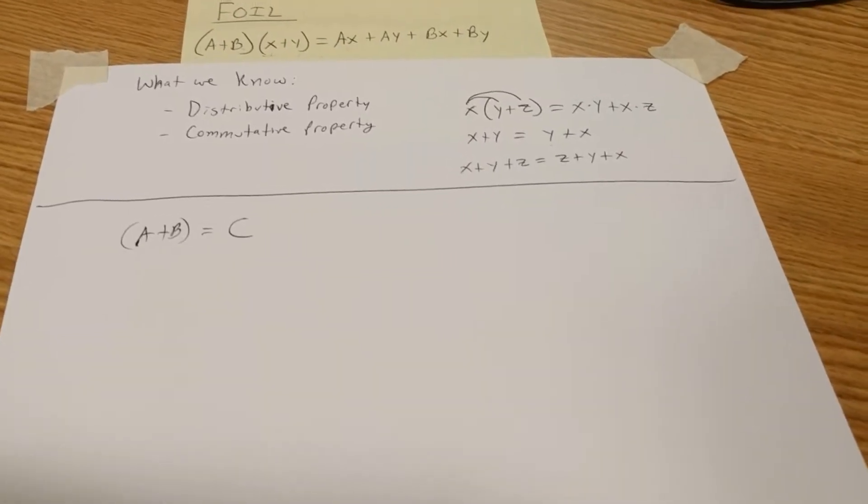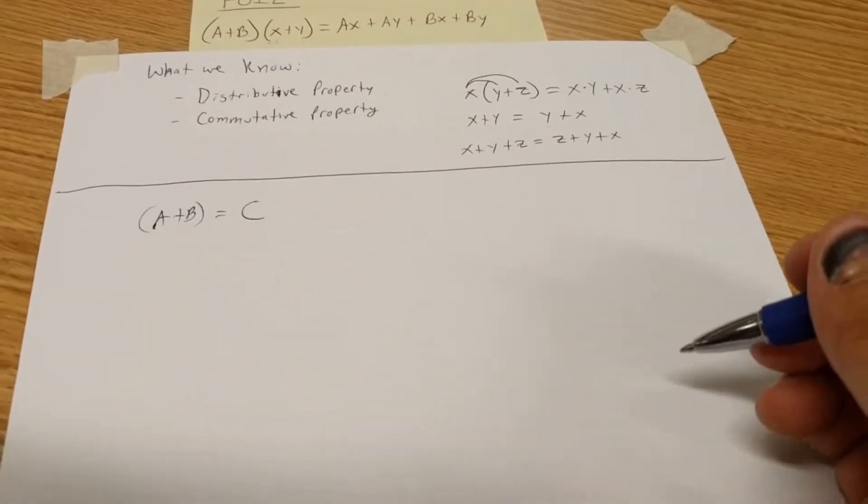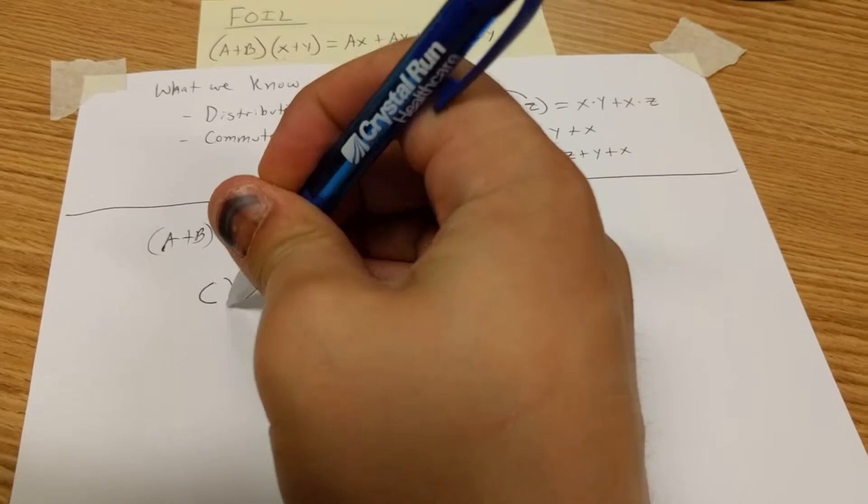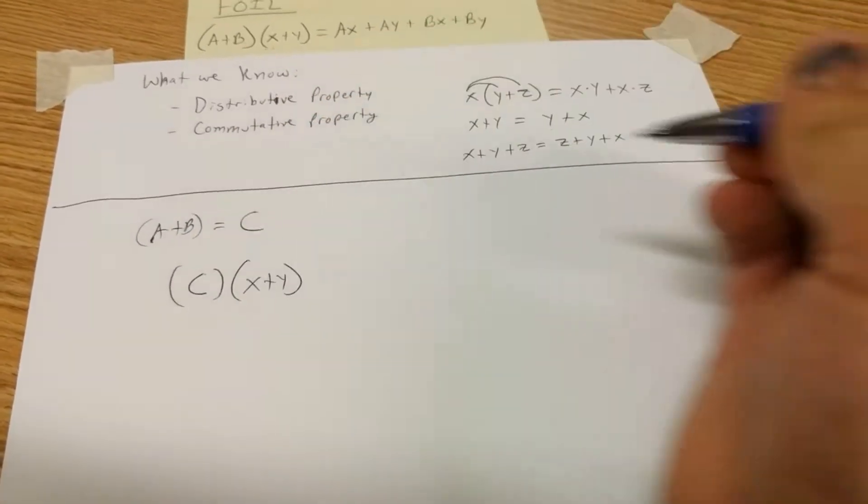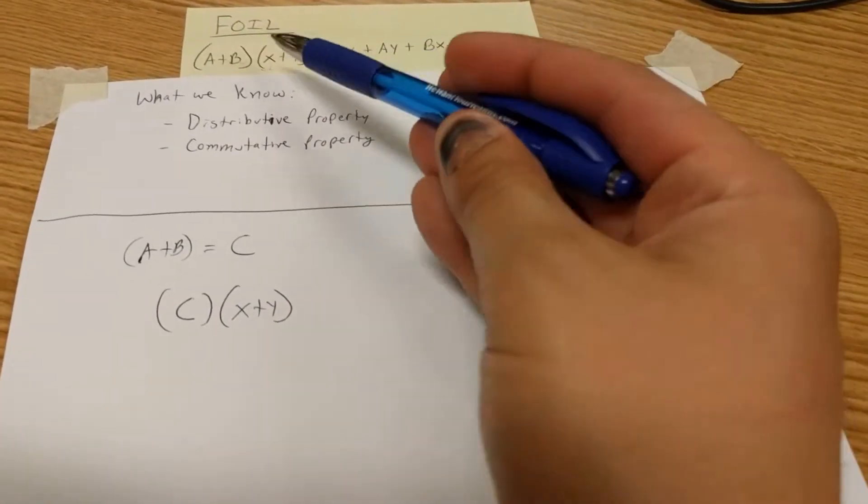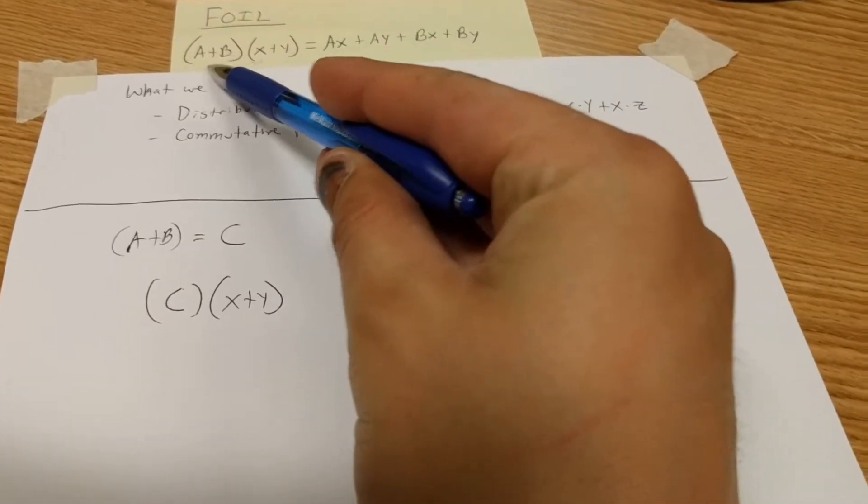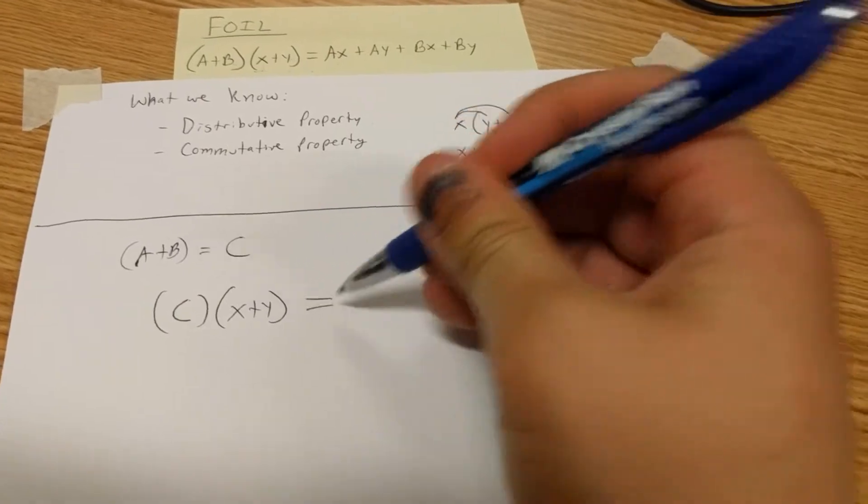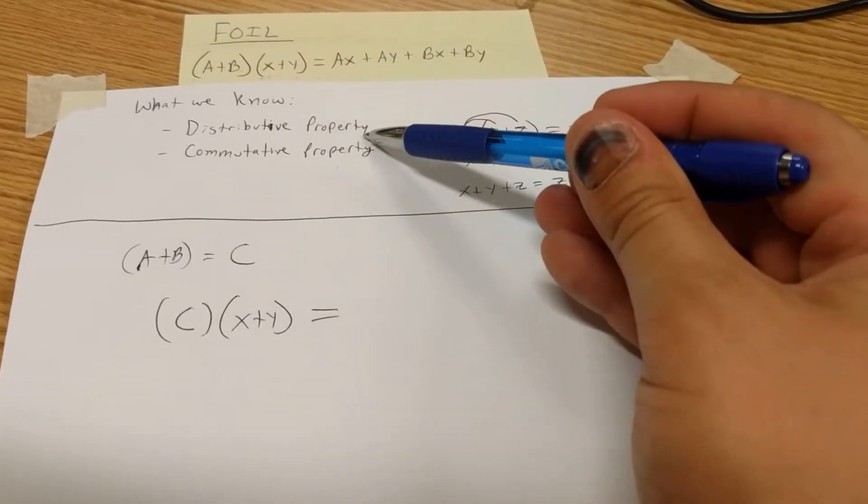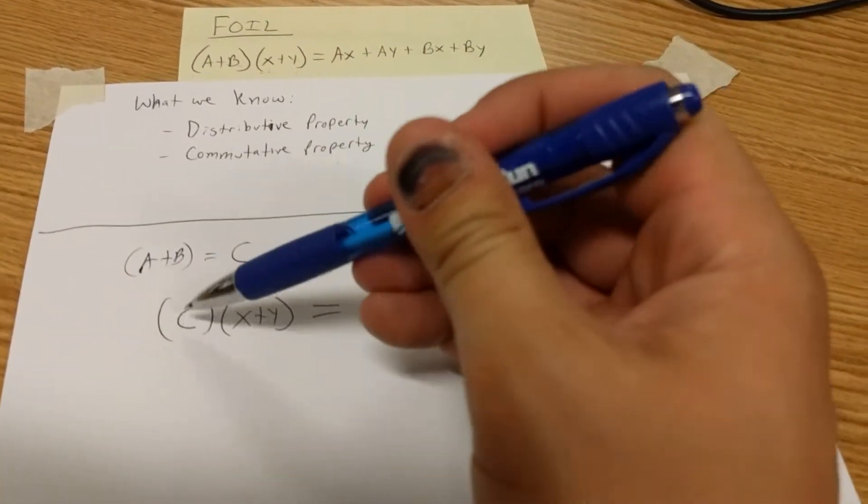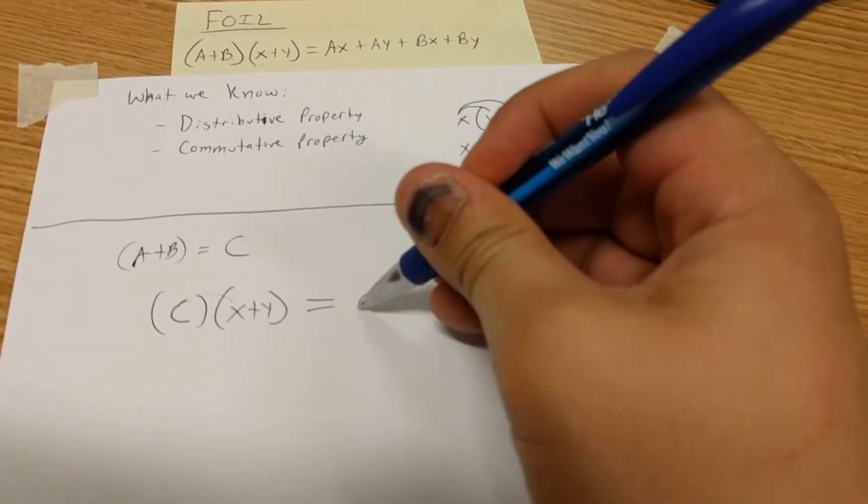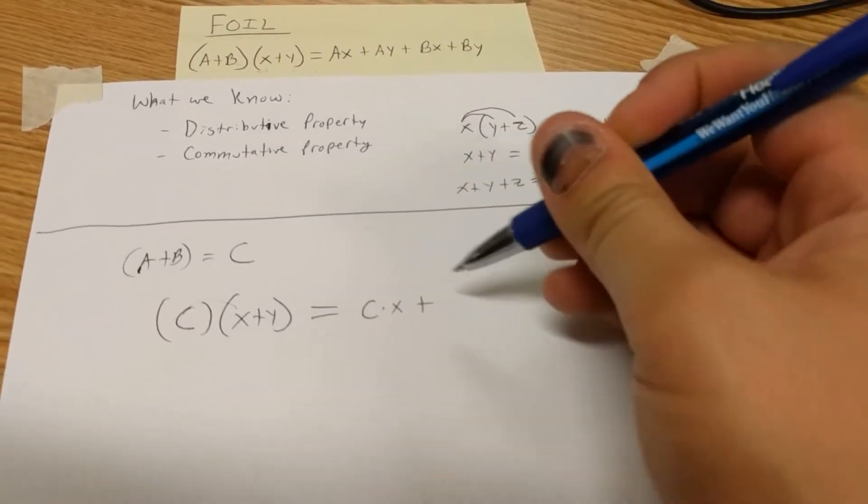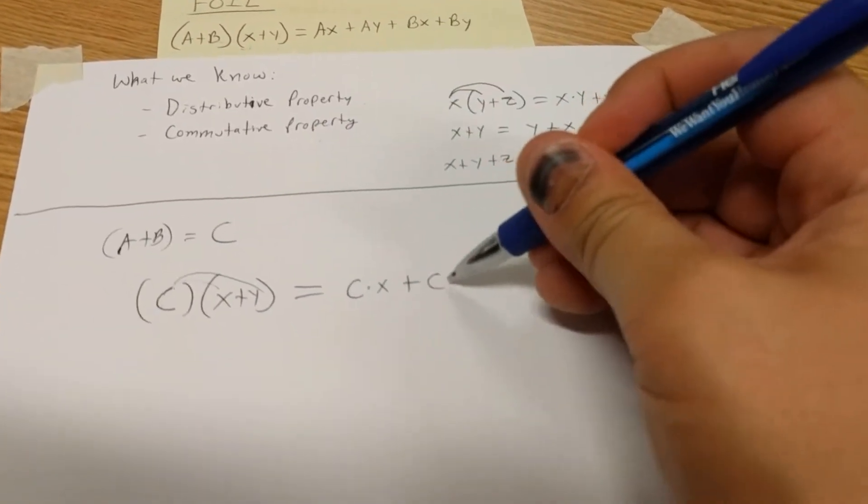So if we take a plus b equals c and substitute it in, we get c times x plus y. That's our original piece for FOIL. All we did was take a plus b and replace it with the letter c. First thing we know is we can use the distributive property. So let's go ahead and use that: c times x plus c times y.